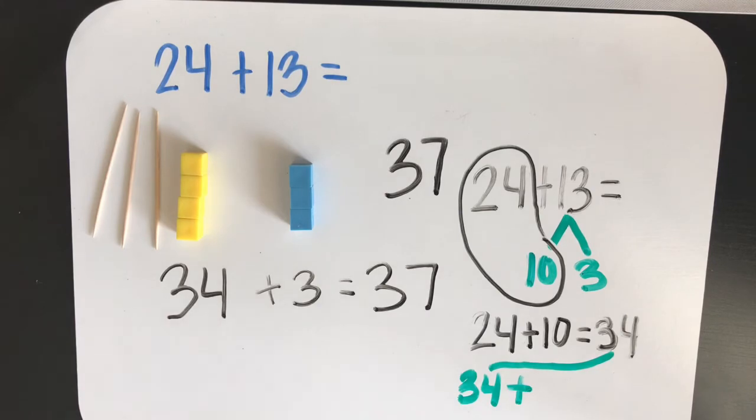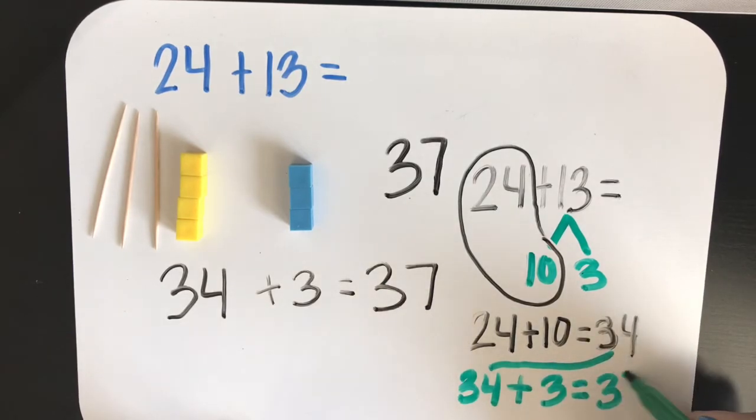And add the ones. How many ones do we have left over to add? Yes. Three equals 37.